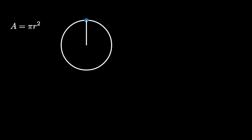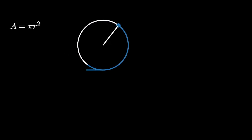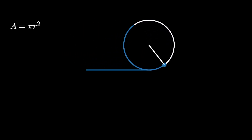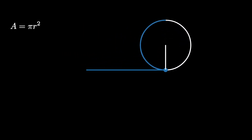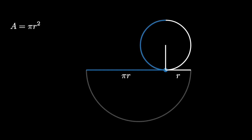Let's paint half the circumference blue and then roll the circle one half turn, so that we are left with a line of length pi times r. Extend the line by the length of the radius r, and we get a semicircle of diameter pi r plus r.